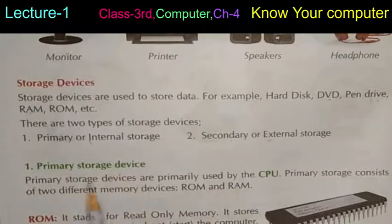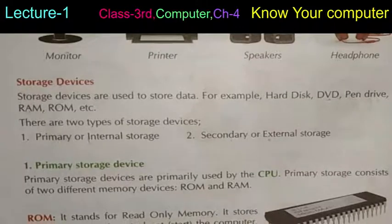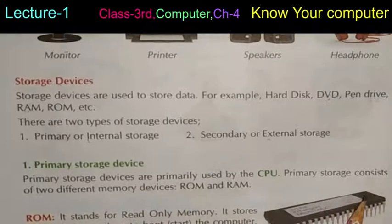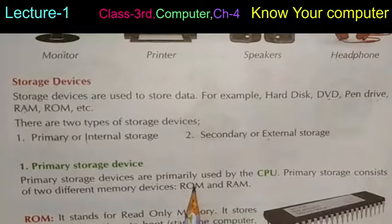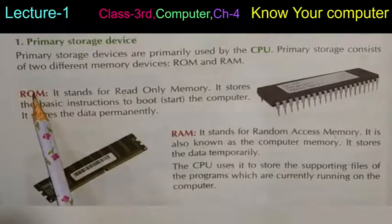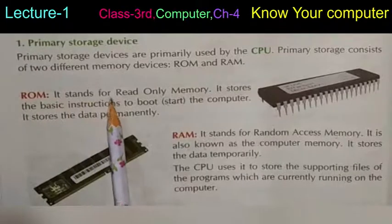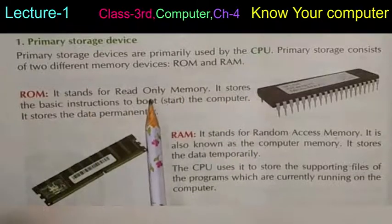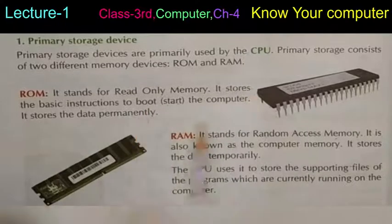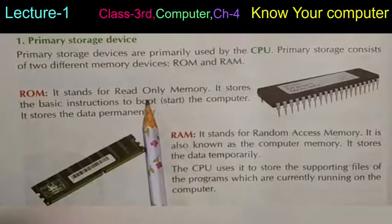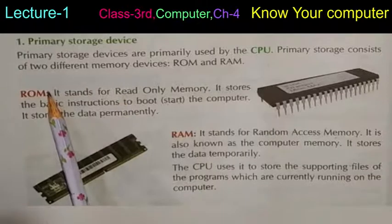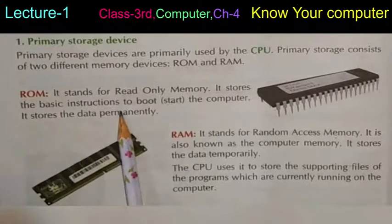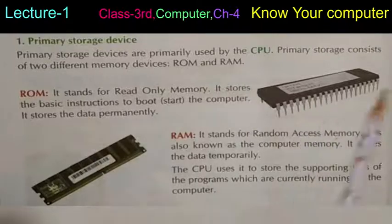Primary storage devices are used by the CPU and consist of two memory devices: ROM and RAM. ROM stands for Read Only Memory. It stores the basic instructions needed to boot — that is, start — the computer. Agar hamare computer mein ROM na ho, toh computer start nahi hoga. ROM stores data permanently.